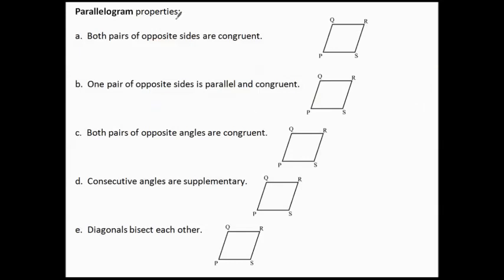The properties will always hold true if we know that we have both pairs of opposite sides parallel. Such as: both pairs of opposite sides will be congruent — these sides across from each other are congruent, and these sides across from each other are congruent, same size.